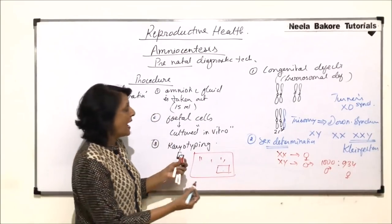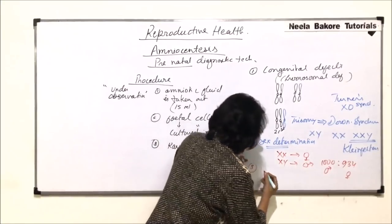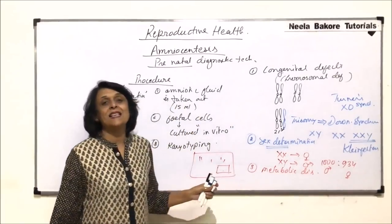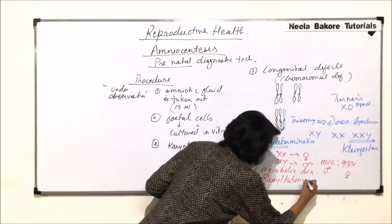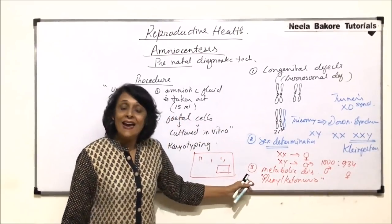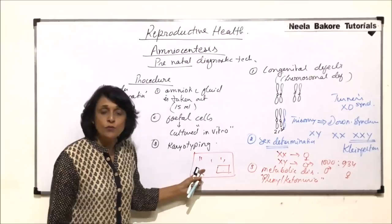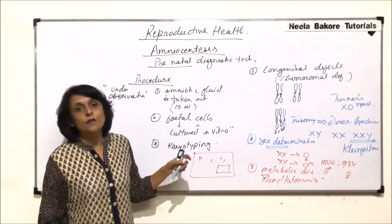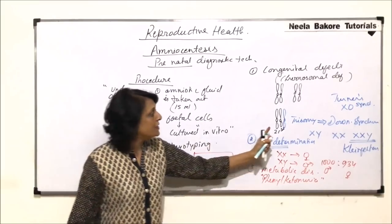Another thing that can be detected using amniocentesis is metabolic disorders. For example, phenylketonuria, in which an enzyme is not produced properly, can also be detected by analysis of the chromosomes taken from the fetal cells. Since all cells have the same genetic makeup, if one cell shows a defect, obviously all other cells carry it too.